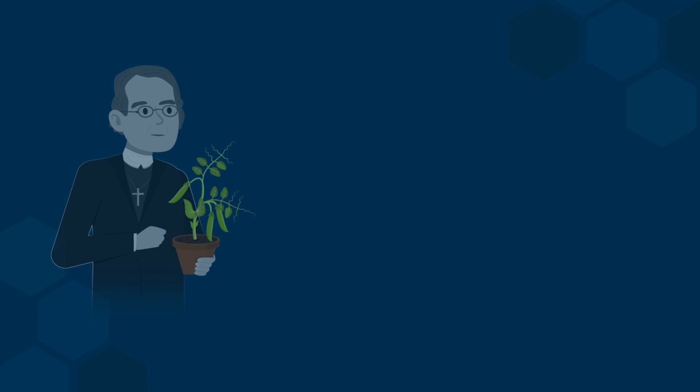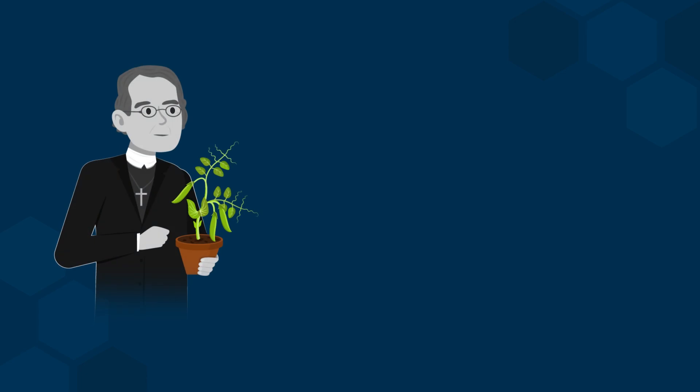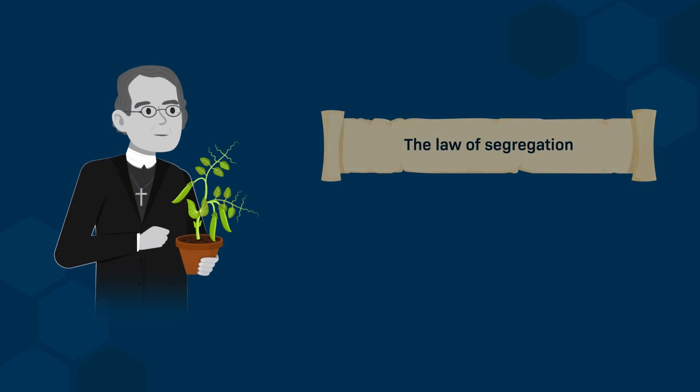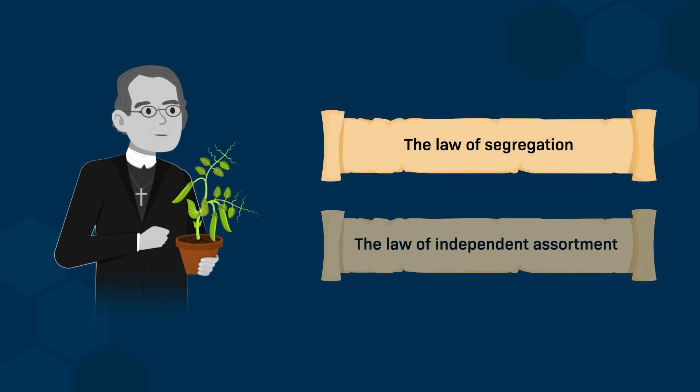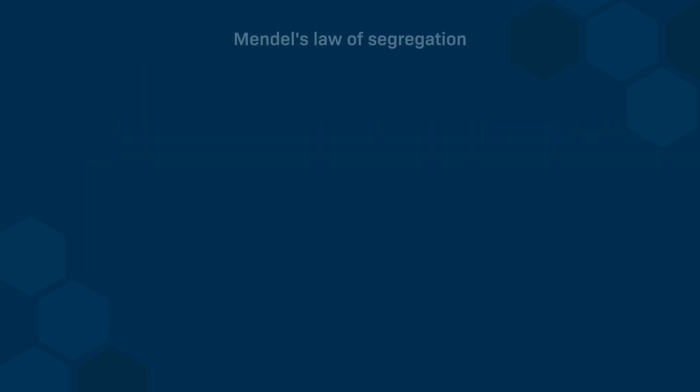One of the first analyses of genetic transmission was done in the 19th century by Gregor Mendel, who established two laws: the Law of Segregation and the Law of Independent Assortment. Let's begin with the Law of Segregation.